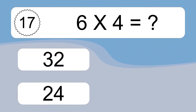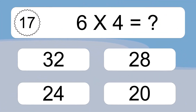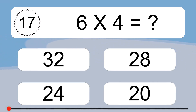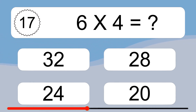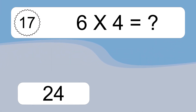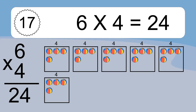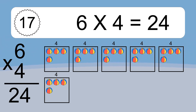6 times 4 equals what? We have 6 boxes, and each box has 4 colorful balls inside. If you count all the balls in all the boxes together, you will have 6 times 4 balls. This equals 24 balls.